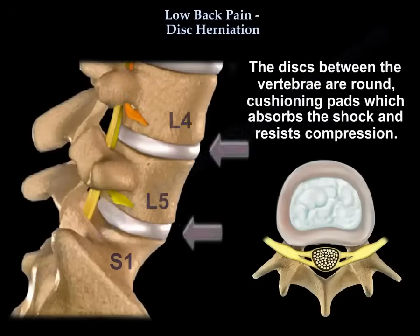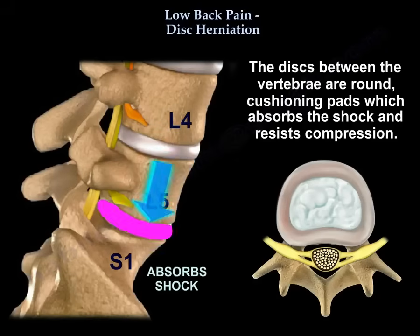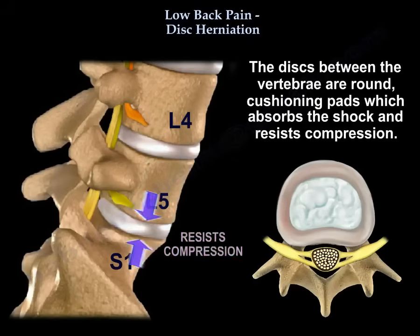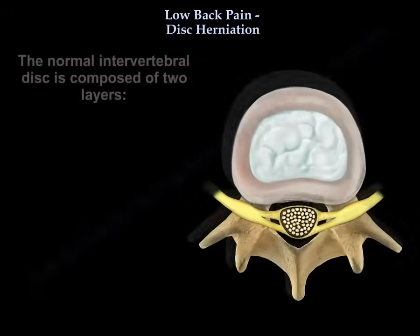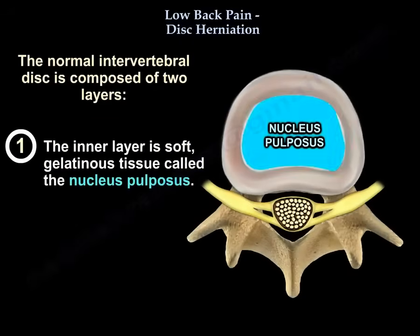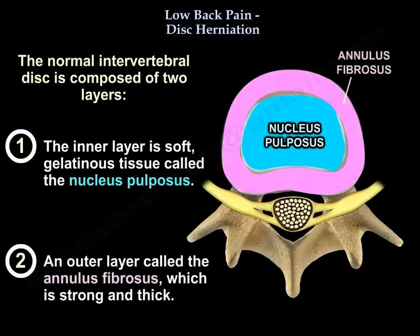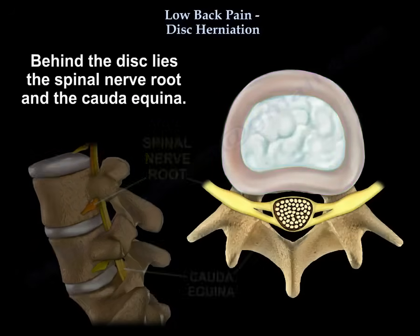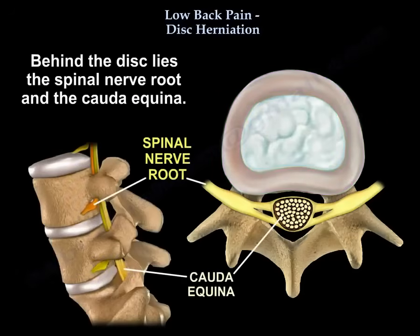The discs between the vertebrae are round cushioning pads which absorb shock and resist compression. The normal disc is composed of two layers: the inner layer is the soft gelatinous tissue called the nucleus pulposus, and the outer layer called the annulus fibrosus, which is strong and thick. Behind the disc lies the spinal nerve root and the cauda equina.